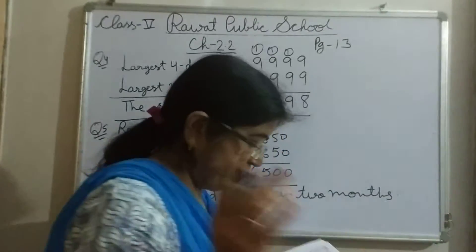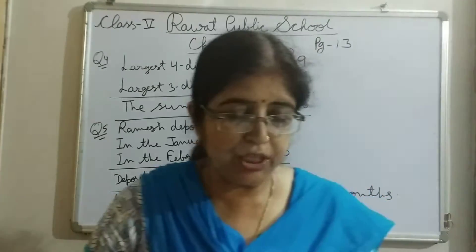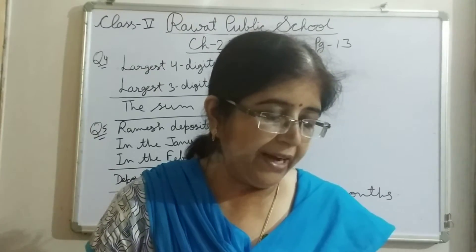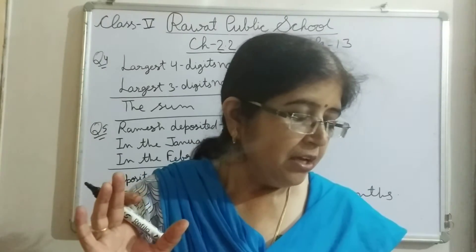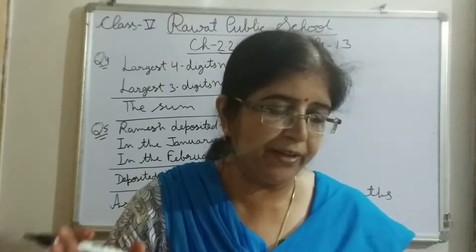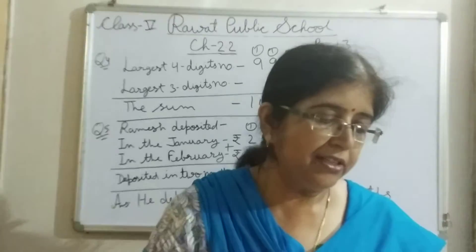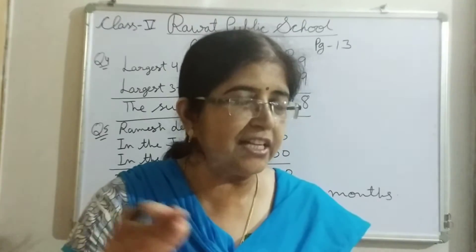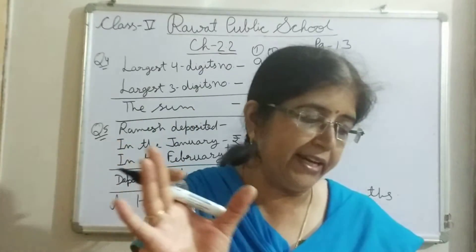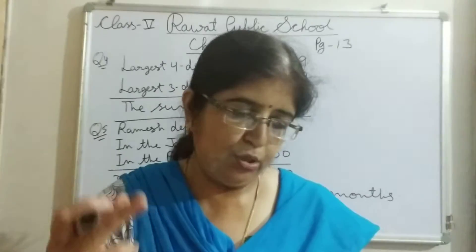Question 6: Anshu bought a cycle for rupees 2,999 and Ruchi bought a cycle for rupees 2,650. How much more money did Anshu spend on the cycle than Ruchi? तो आपको क्या बताना है - Ruchi से उसने कितने ज़्यादा rupees दी है Anshu ने. इसमें amount किसका ज़्यादा है - Anshu का. तो पहले Anshu का लिखेंगे, फिर Ruchi का, और फिर subtract करना है - to yourself, यह अपने आप करेंगे.